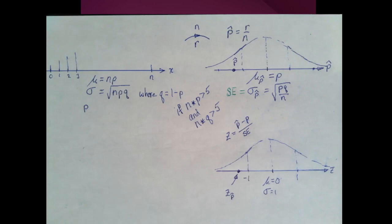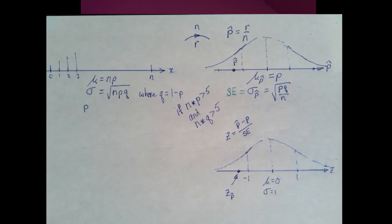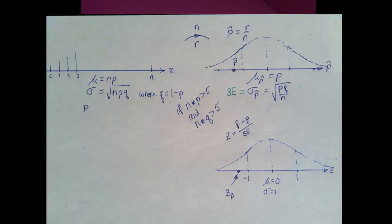This is the three-distribution diagram for a proportion — one sample proportion. Understanding this three-distribution diagram allows us to do hypothesis testing and confidence intervals, and we'll use it in a different way in each of those cases.